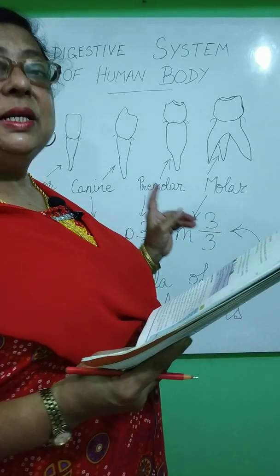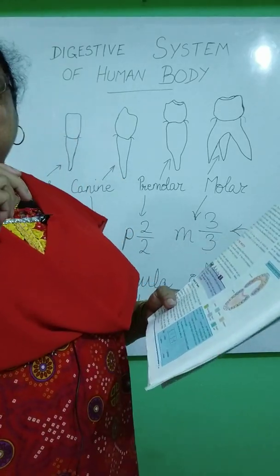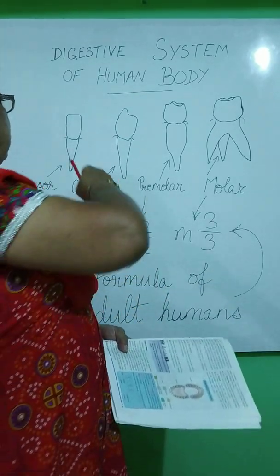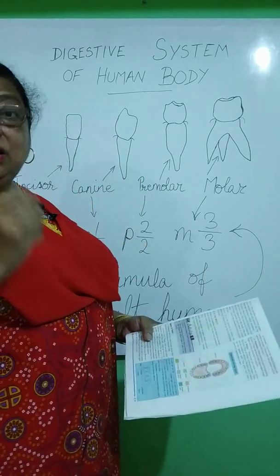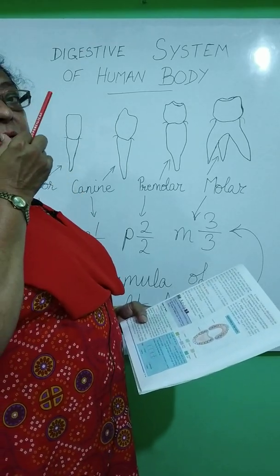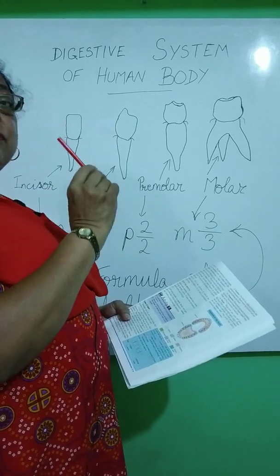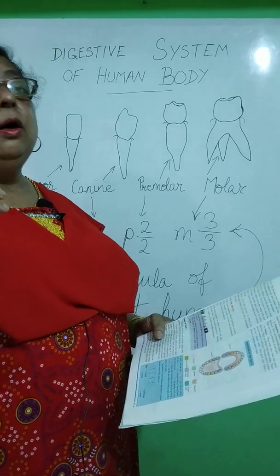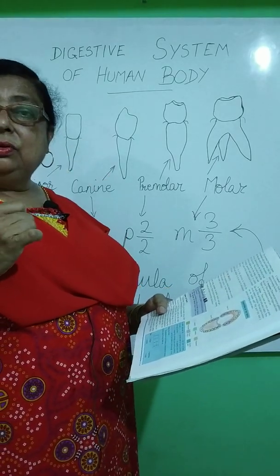There are different types of teeth. First are the incisors — the sharp, broad teeth at the front of the mouth, meant for cutting food. The lower part is embedded in the jaw; only the upper part is visible. There are four incisors in the upper jaw and four in the lower jaw. Just after the incisors are the canines — single pointed teeth on both sides of the upper and lower jaw, meant for tearing food.